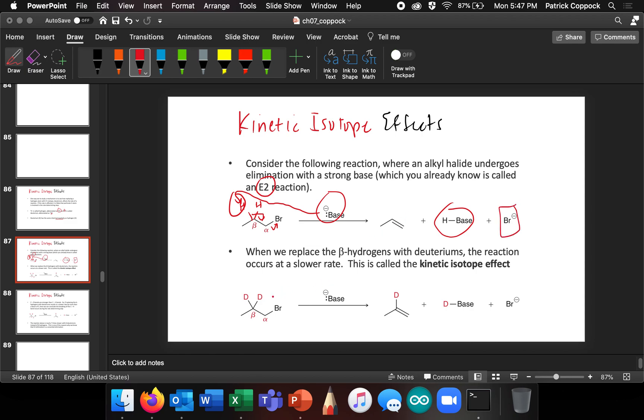Well, if we replace those beta hydrogens with deuteriums, so I've got two—these are hydrogens still, but they have neutrons in them—then it turns out it reacts at a slower rate. So if one of the hydrogens gets pulled off, there's the base with the hydrogen on it and the leaving group. If that gets pulled off, then this is what we're left with.